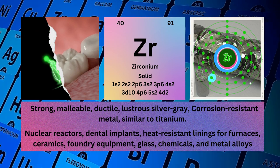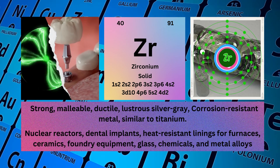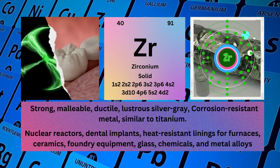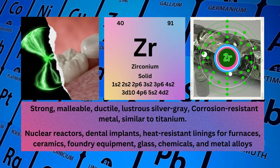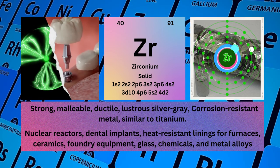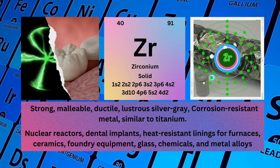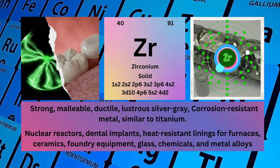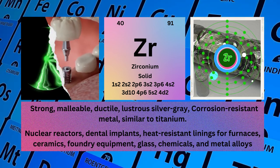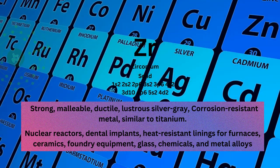Electronic configuration: 1s² 2s² 2p⁶ 3s² 3p⁶ 4s² 3d¹⁰ 4p⁶ 5s² 4d². Physical properties: strong, malleable, ductile, lustrous silver-gray, corrosion-resistant metal, similar to titanium. Zirconium is used for nuclear reactors, dental implants, heat-resistant linings for furnaces, ceramics, foundry equipment, glass, chemicals, and metal alloys.